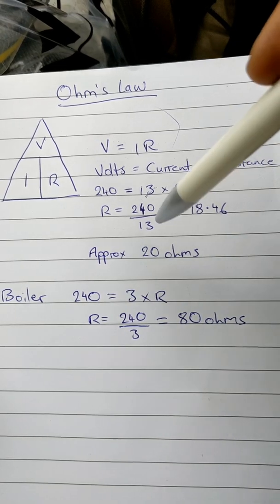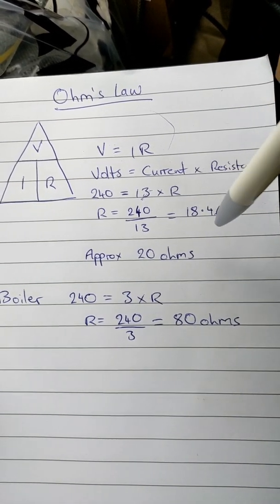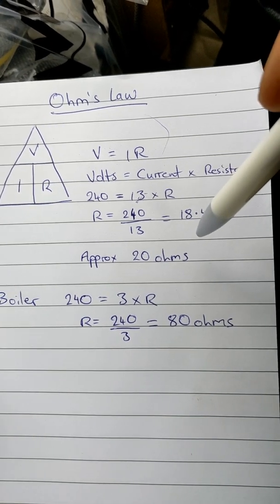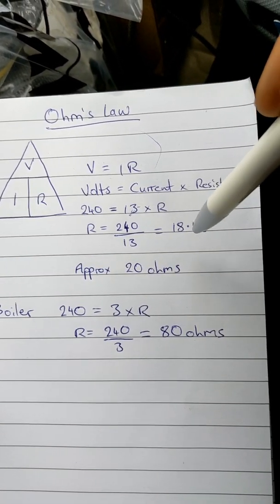Now, as long as you've got 20 ohms or thereabouts, this proves that the appliance that you're testing does not have a short circuit and it's safe to use. So it means when you switch it on, it's not going to go bang.